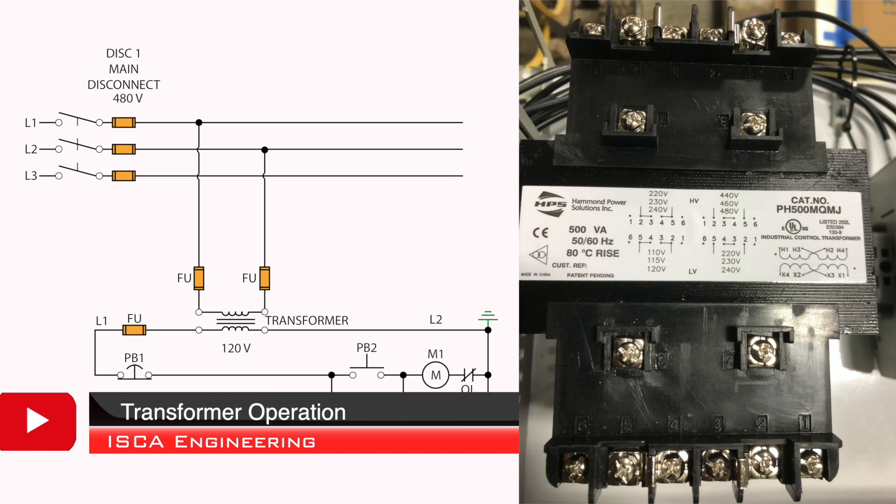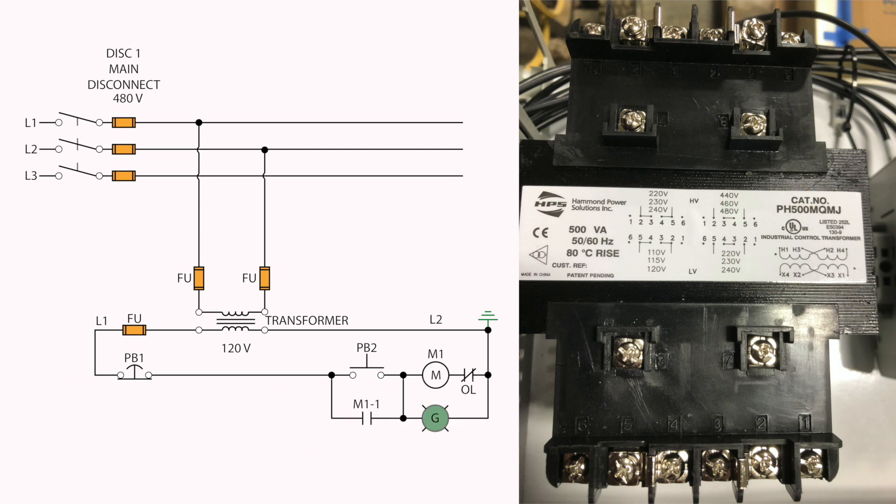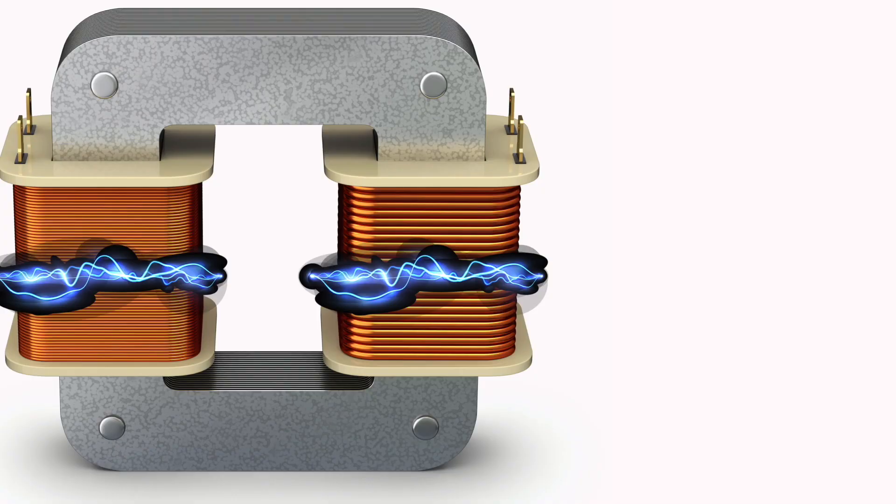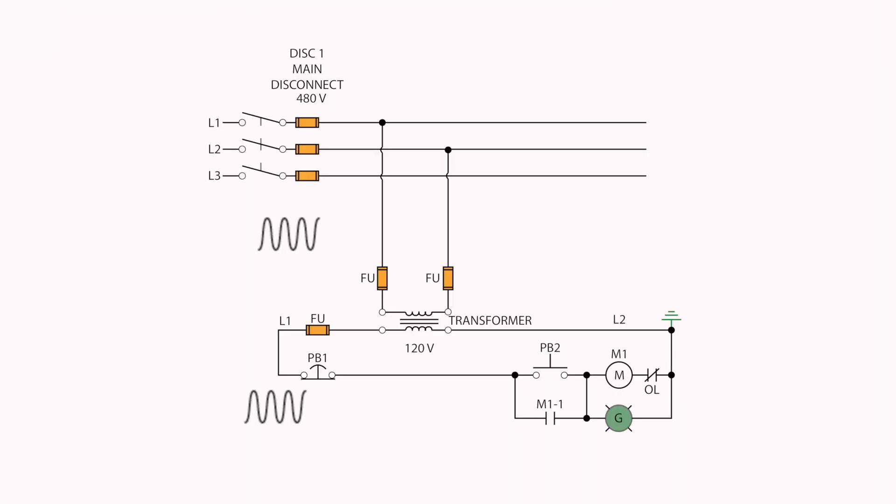What is a transformer? A transformer is used to transfer AC energy from one circuit to another. The two circuits are connected by a magnetic field instead of a conductive path. This transfer of energy can increase or decrease the voltage, but the frequency will stay the same on both sides of the circuit.